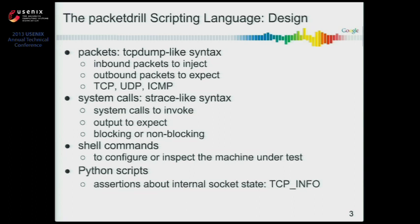For system calls, the second type of statement, we used a syntax that's like strace, since most people are familiar with that, at least in the Linux world. With system calls, you can specify both the system call to invoke and its inputs, and also the output you expect from that system call. We support blocking and non-blocking system calls. The third type is a shell command — mostly for configuring your system, such as setting a sysctl value, or inspecting the machine with netstat or SS. The fourth type is a scripting language — right now just Python — which allows you to make assertions about the internal state of the socket, exported via a socket option called TCP info, available on both Linux and FreeBSD.